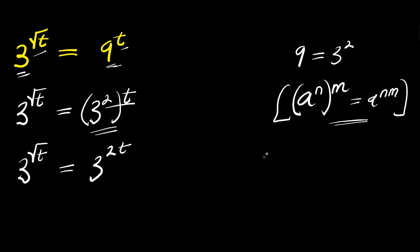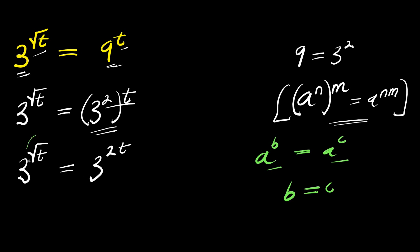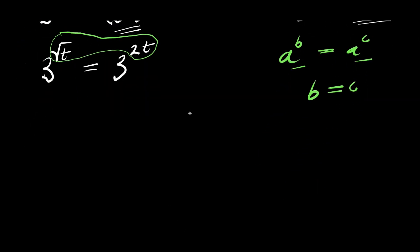Now, if you have a to the power of b equals a to the power of c, since the bases are the same you can have b equals c. So we are going to equate the exponents, that means I am simply going to have square root of t equals 2 times t.